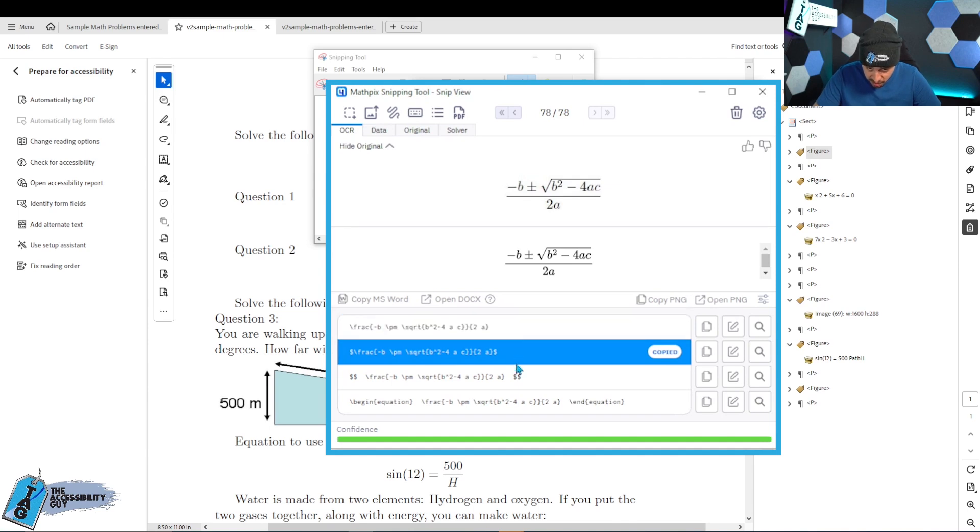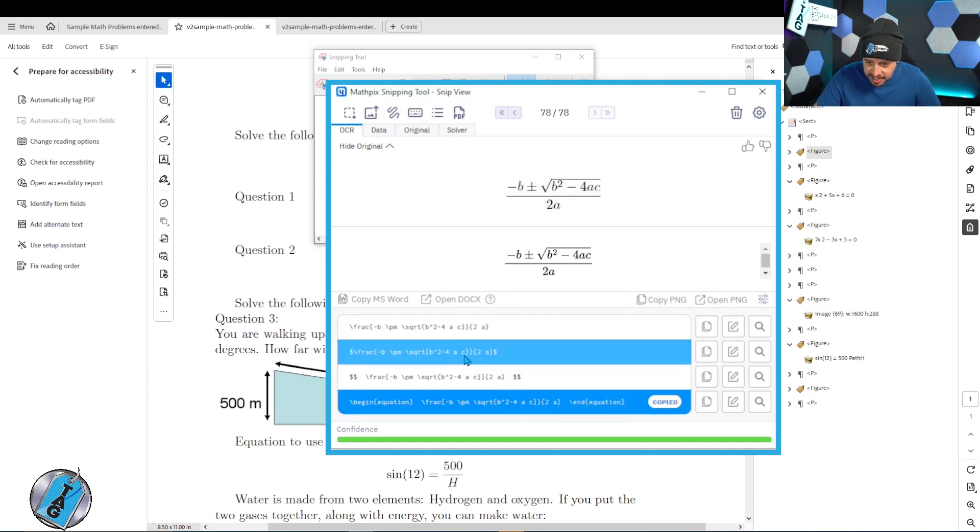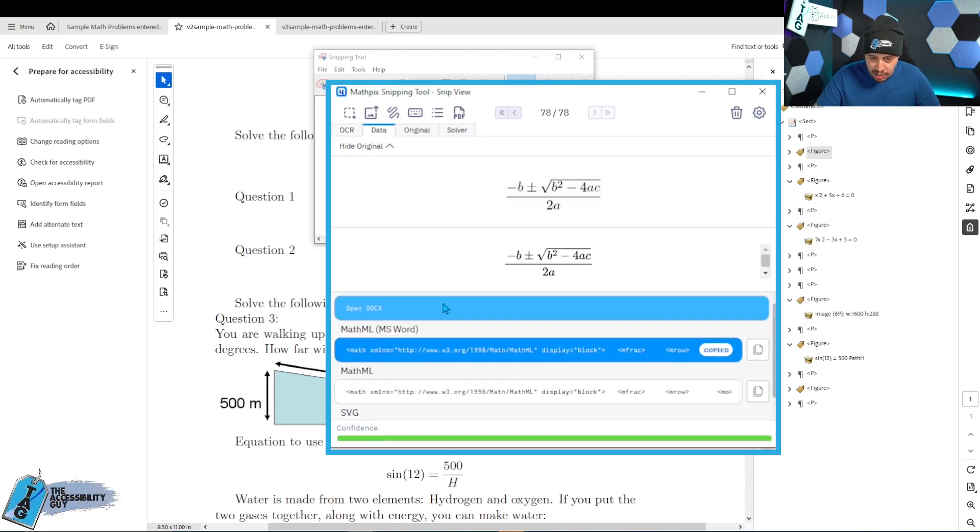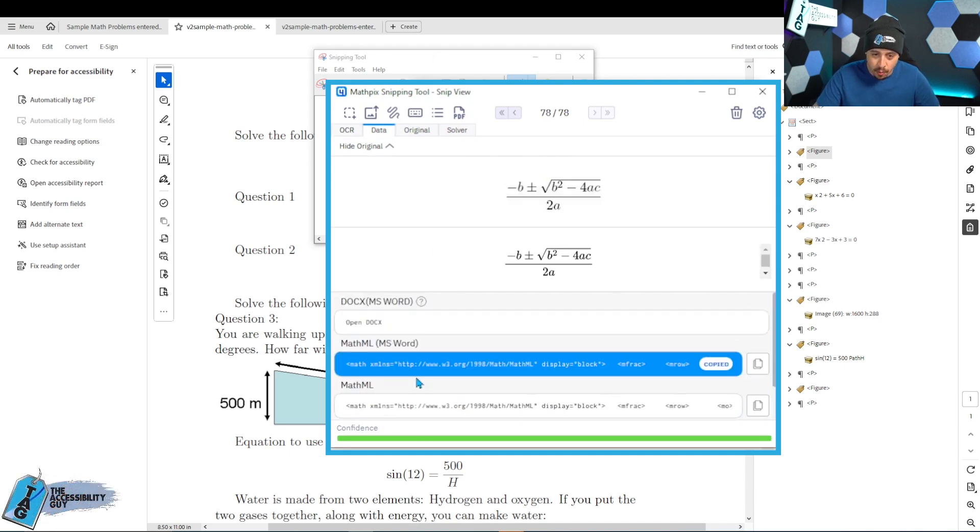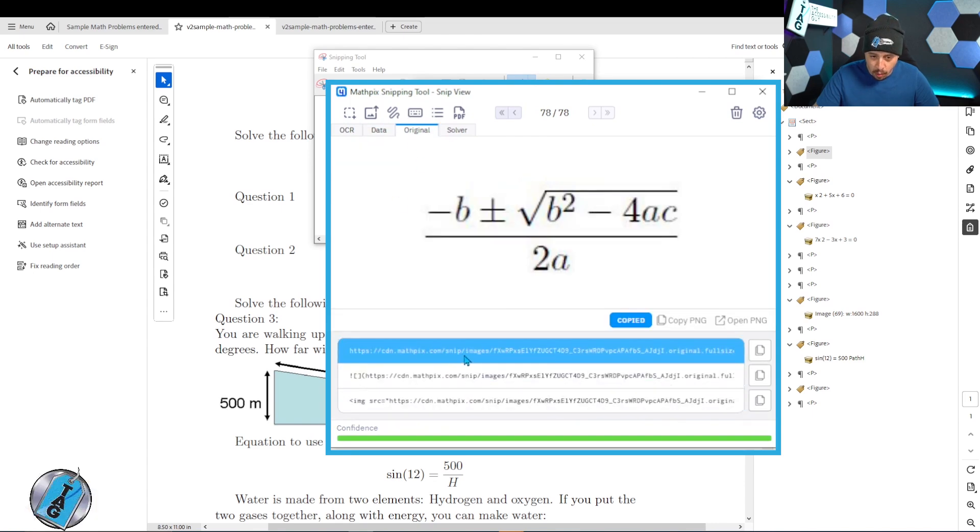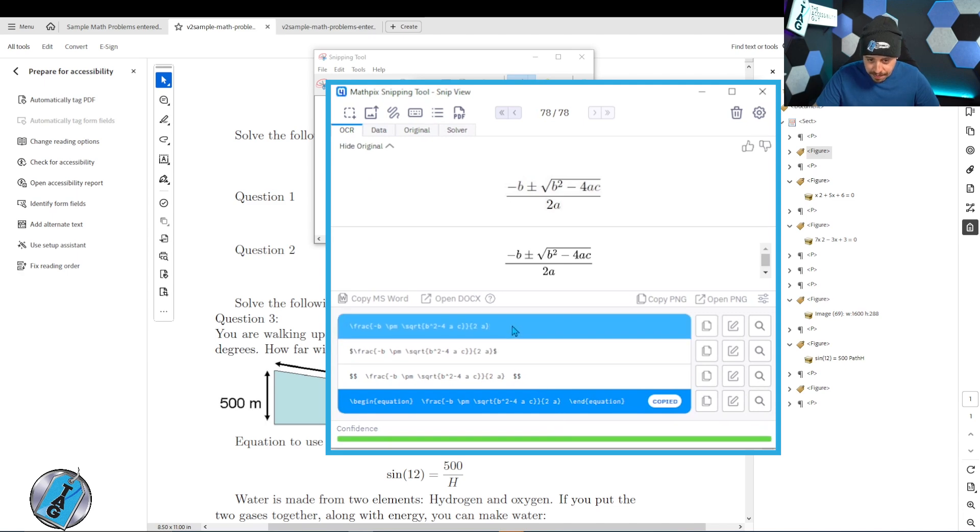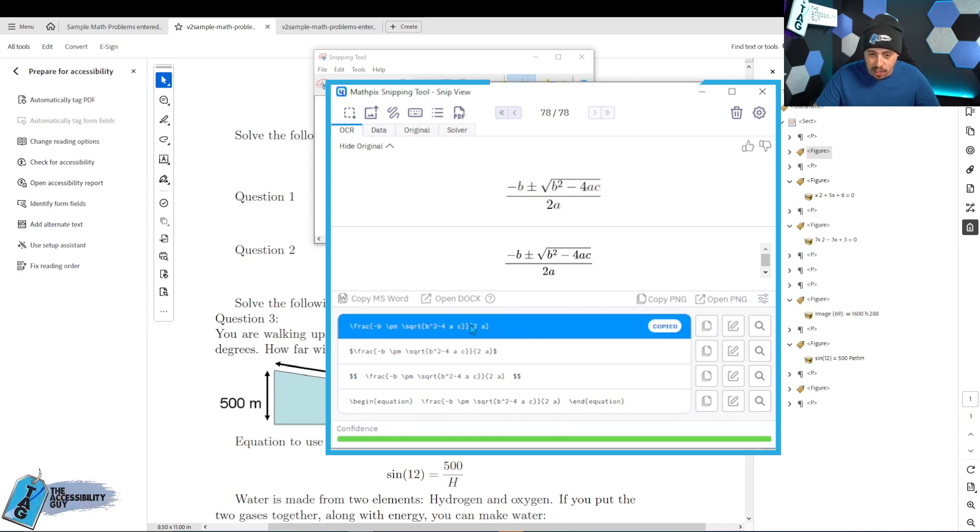So we have different forms of LaTeX in here. And these are different things that we can do to basically use the information. So we have MathML. We've got SVG that we can choose from. We've got the original equation. There's also a problem solver, which is crazy. But we're just going to take this regular LaTeX right here.